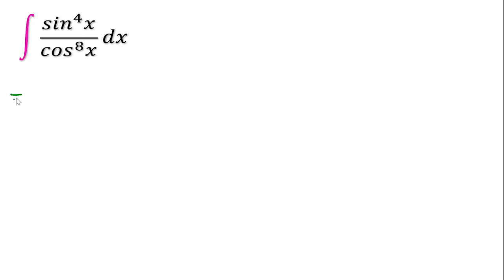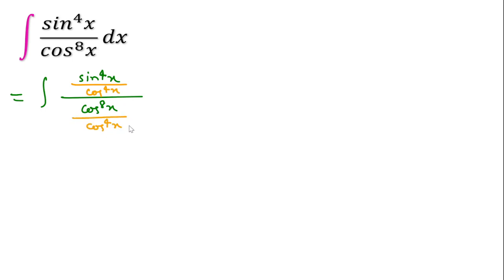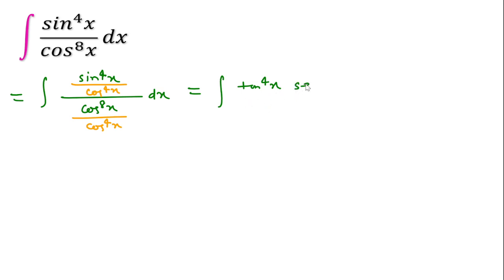In the first problem, to solve this I will divide the numerator and denominator by cos 4x. Then we can write sin 4x over cos 8x, and if we divide this by cos 4x then you will notice this becomes tan 4x. After dividing, this becomes cos 4x and we can write 1 over cos 4x as sec 4x.